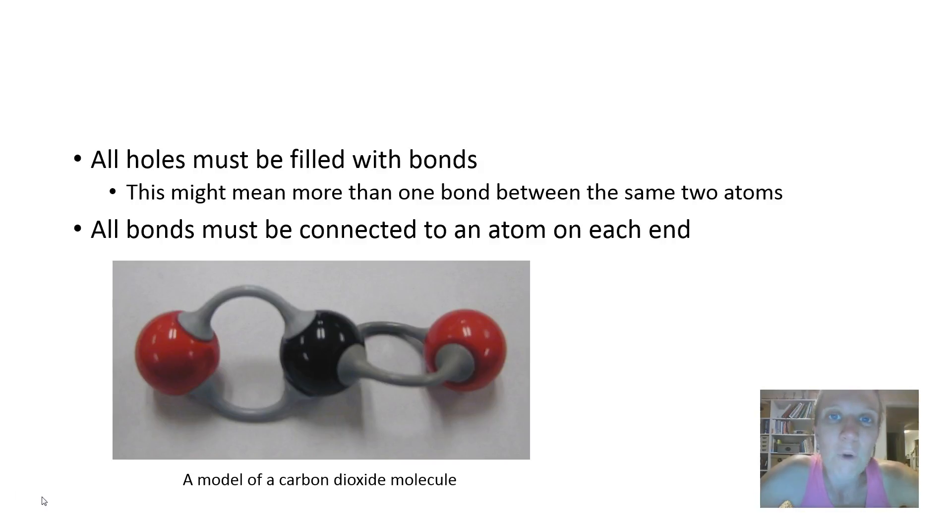This is an example of what a model of a carbon dioxide molecule should look like. Notice that the black ball in the centre represents the carbon atom. The two red balls on either side represent the oxygen atoms. And you'll notice that there are actually four bonds here, making sure that all of the holes in the model atoms are filled and that all of the bonds are connected to something on both sides.